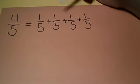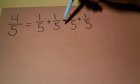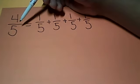That should give me 1, 2, 3, 4, which is the numerator, and the 5 stays the same because that is the denominator.